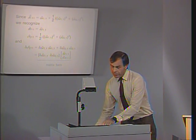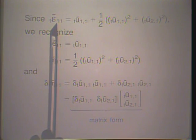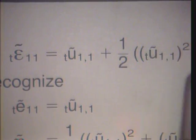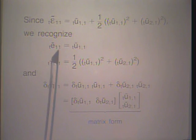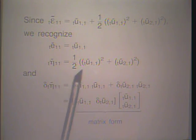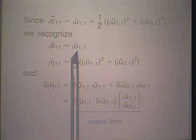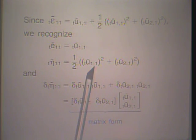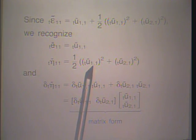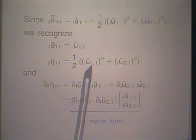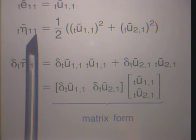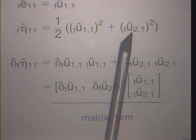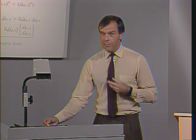To evaluate these terms, we recognize that the total incremental Green-Lagrange strain is given by a general continuum mechanics relationship: the linear strain term plus the nonlinear strain term. These expressions are directly obtained from the general continuum mechanics equations with indices i=j=1. The index k goes over 1 and 2 in this 2D case; in 3D it would also include k=3. An important point is that the displacement derivatives are constant along the truss because we have only two nodes, giving only a linear variation in displacement.